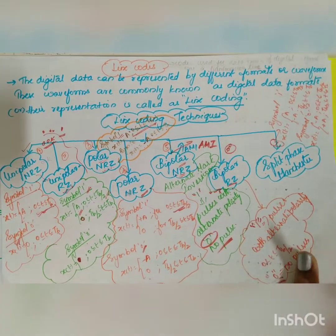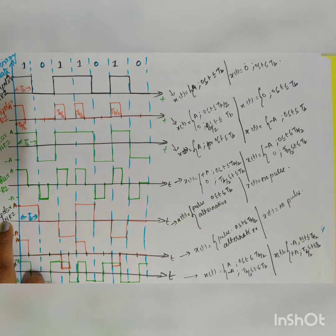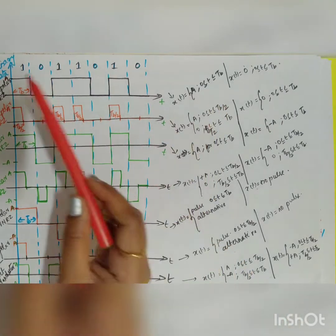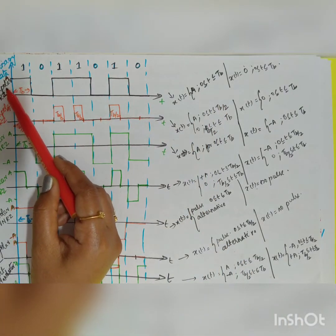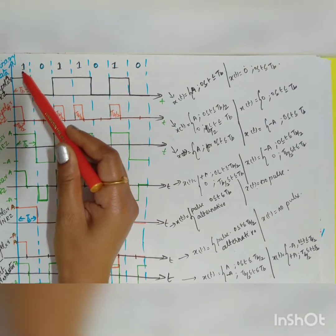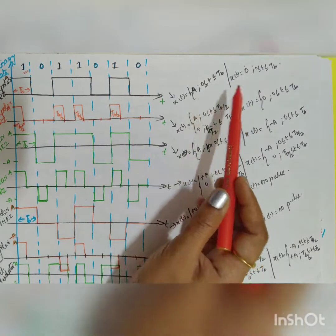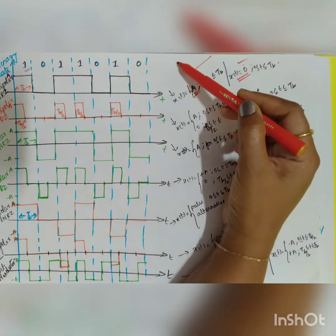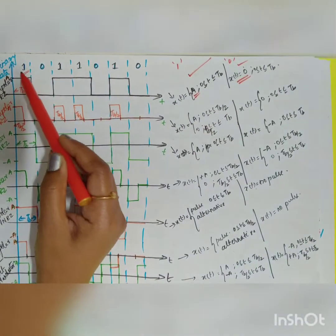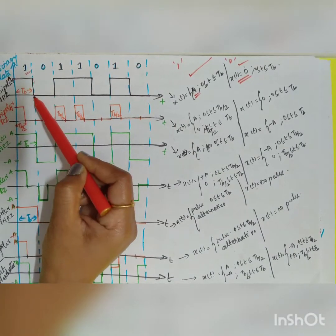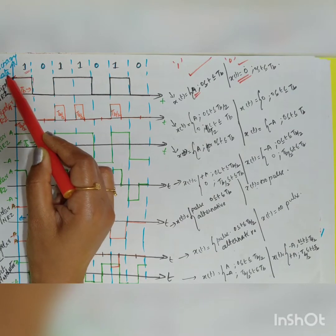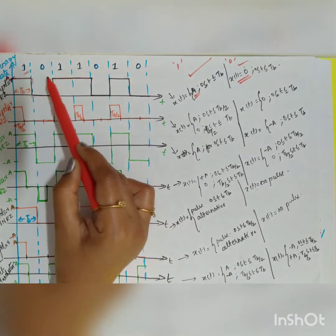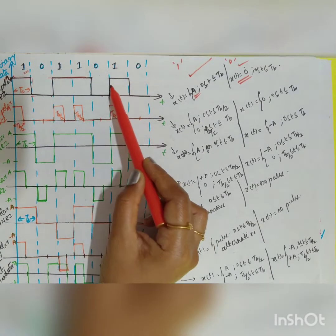Let us see an example. The binary data is 1011010. For unipolar non-return to zero: if 1 is transmitted it is A; if 0 is transmitted there is no pulse. So for 1, for the entire time duration, the amplitude is A. For 0, no pulse. For the next 1, it is A again. For 0, it is 0. For 1, it is A.